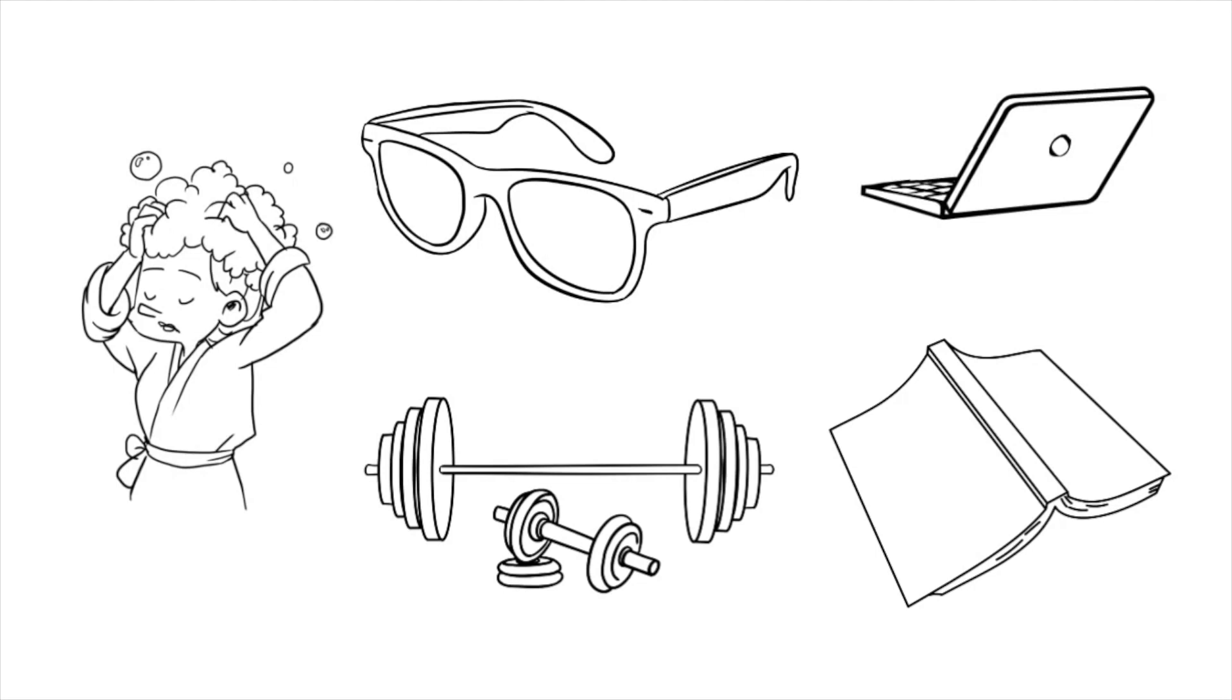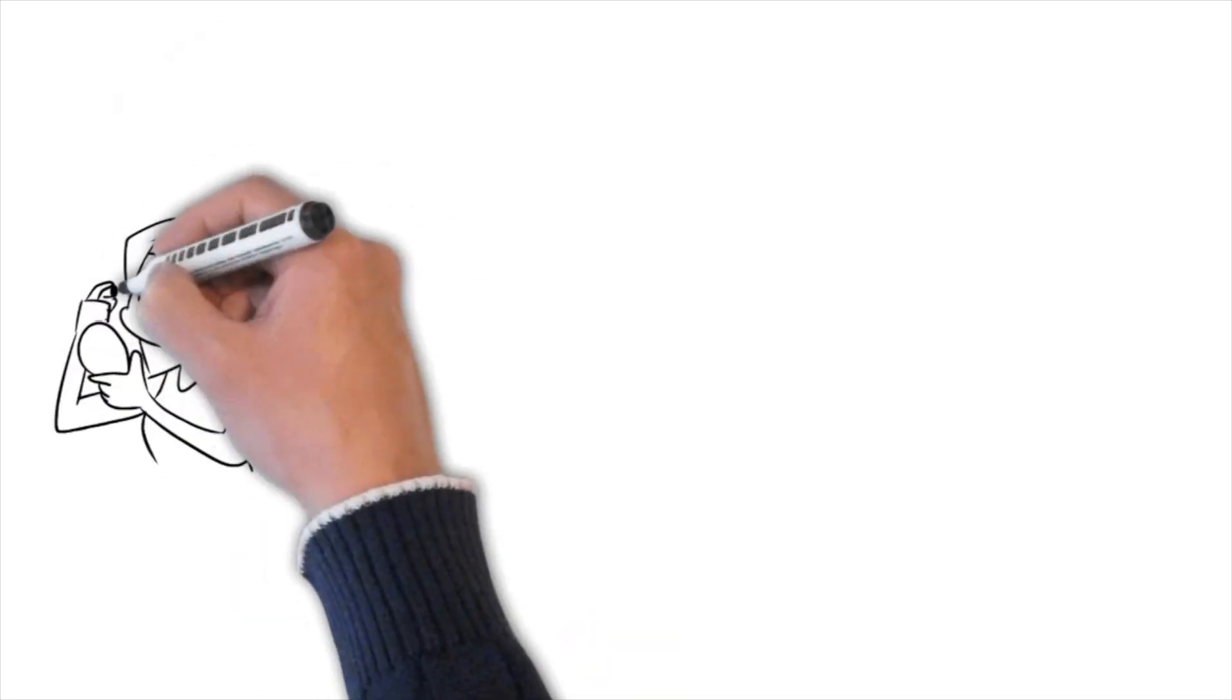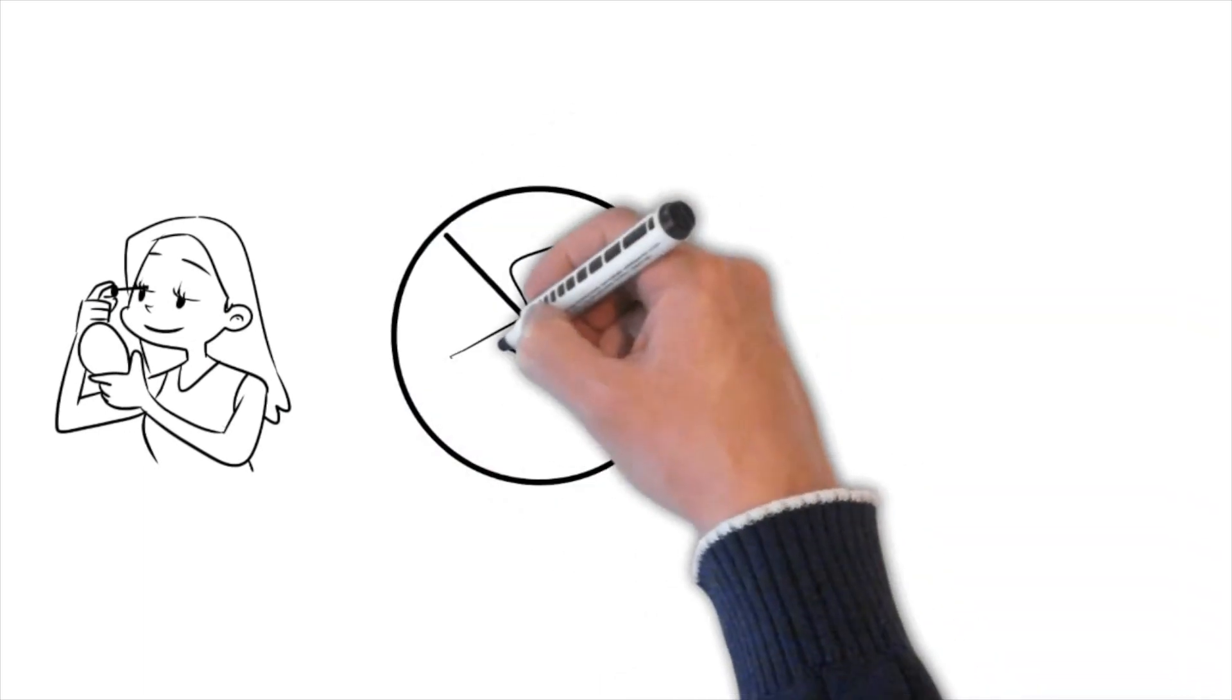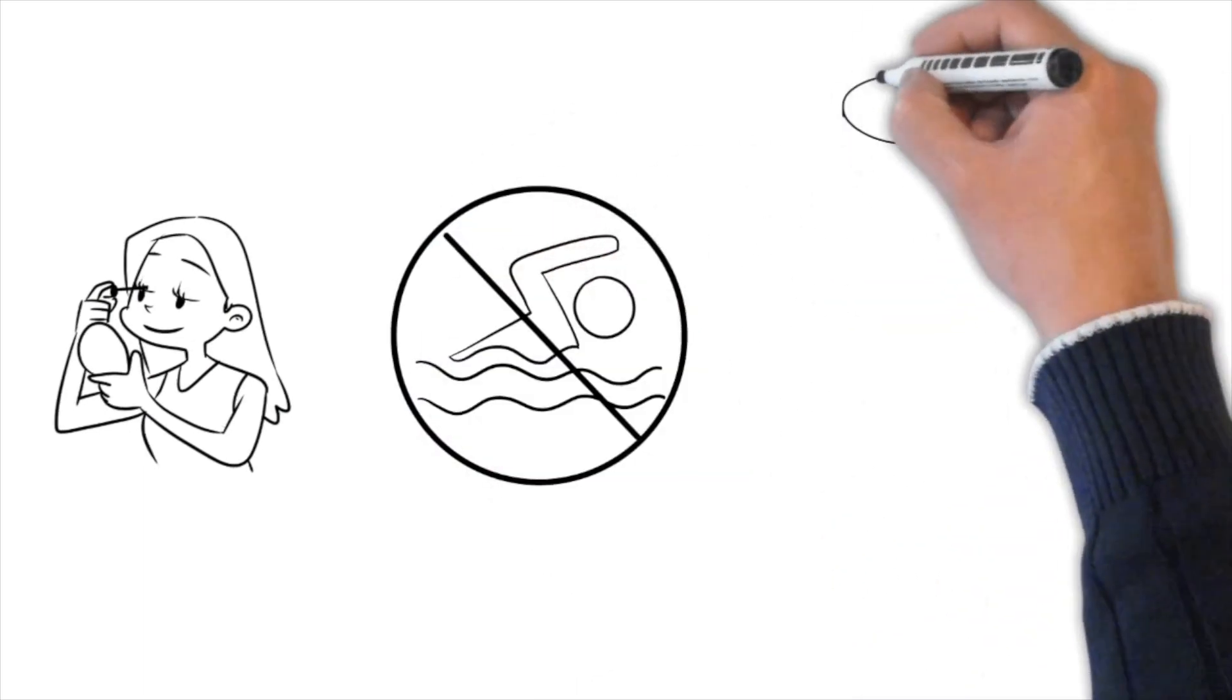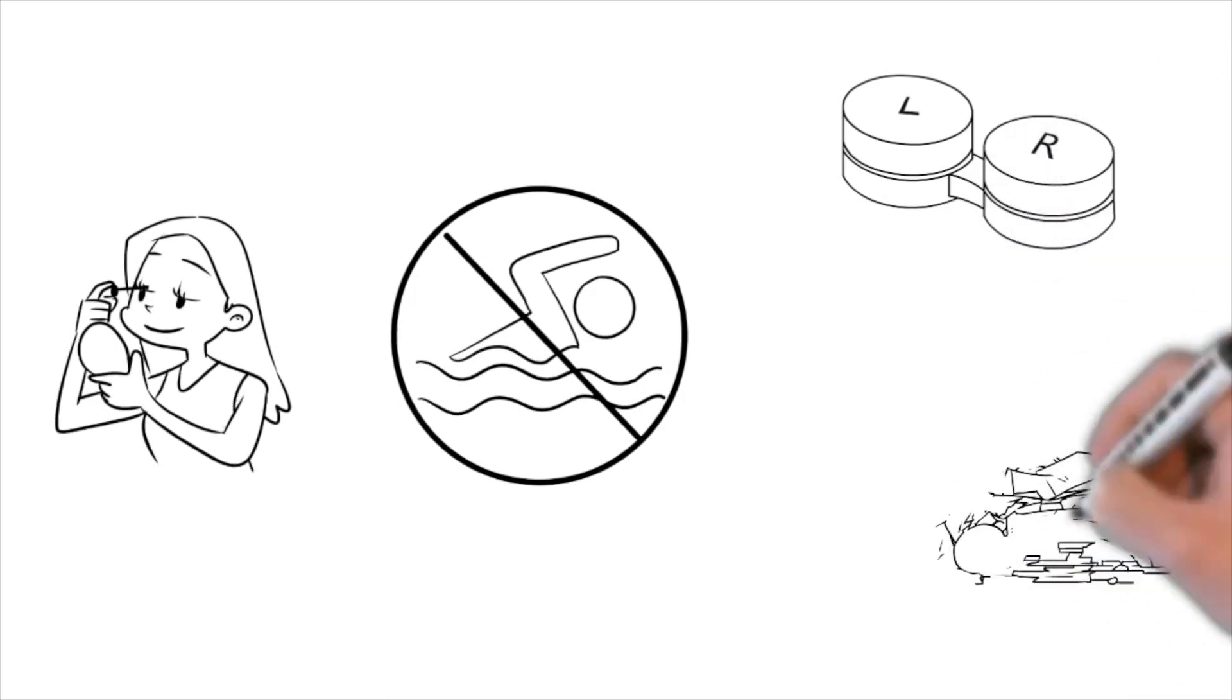So what can't you do after your procedure? No eye makeup for seven days. It can harbour germs and cause infections. No swimming for 14 days or until you're given the all clear at your one week check. Don't wear contact lenses until your Maxidex drops are finished. And no driving until your vision is back to normal.